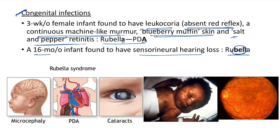Manifestations of congenital rubella syndrome: microcephaly, patent ductus arteriosus, congenital cataracts (responsible for leukocoria/absent red reflex), skin manifestations called blueberry muffin skin, and retinitis called salt-and-pepper retinitis.